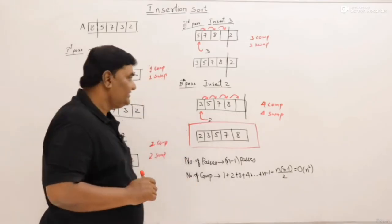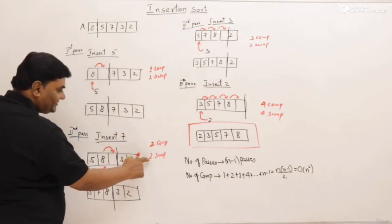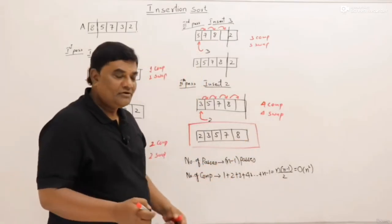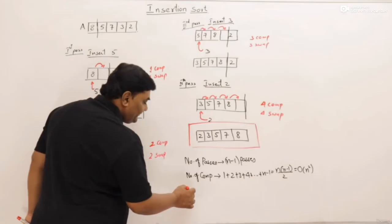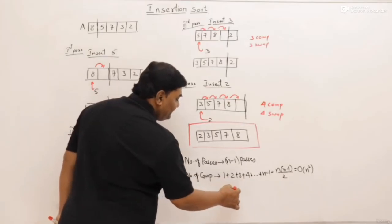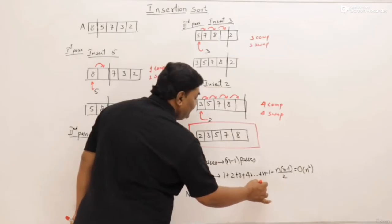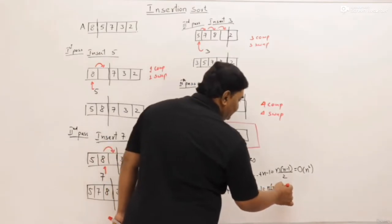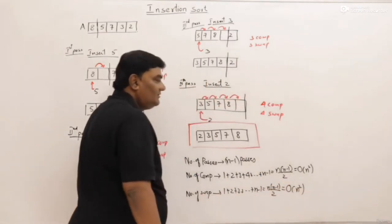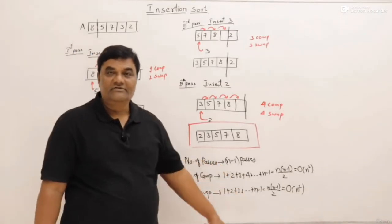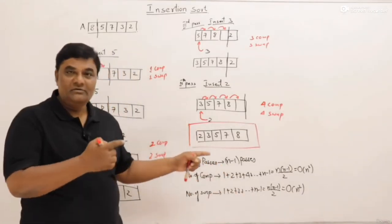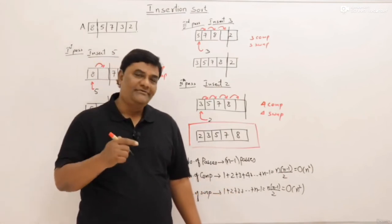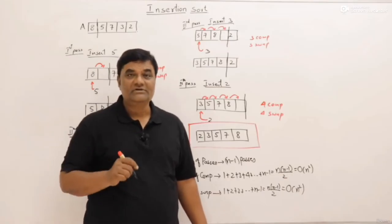For swaps: one swap in the first pass, maximum two in the second, then three and four. The number of swaps for n elements is also 1 + 2 + 3 + ... + (n−1), which equals n(n−1)/2 — so maximum swaps are also order of n squared. This covers comparisons and swaps. We also have to check whether insertion sort is adaptive and stable, but before that let me mention a few important things.